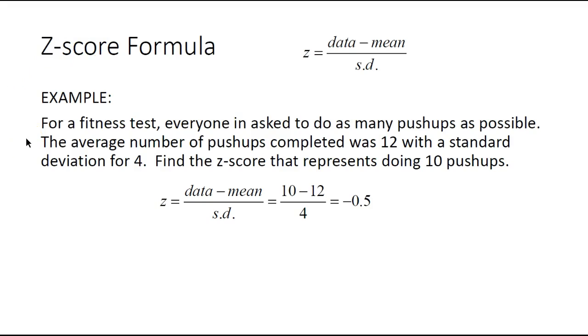Here's an example. For a fitness test, everyone is asked to do as many push-ups as possible. The average number of push-ups completed was 12 with a standard deviation of 4. Let's find the z-score for doing 10 push-ups. 10 minus 12 divided by 4 gives you negative 0.5, meaning you're half a standard deviation below the mean.